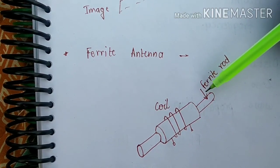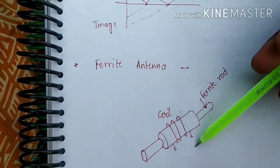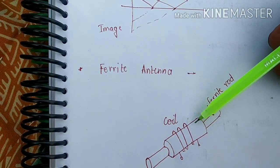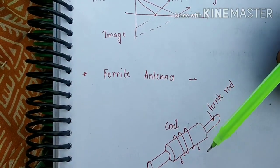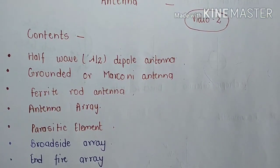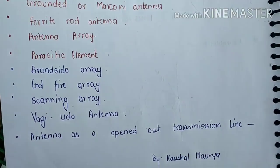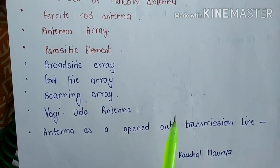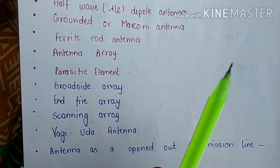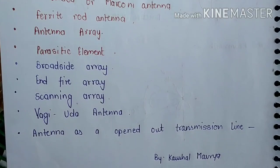The ferrite rod antenna is used in small portable receivers. This concludes the video covering the antenna topics. In the next video, we will cover more antenna topics. If you liked the video, please comment. Thank you so much, and please subscribe to our channel.